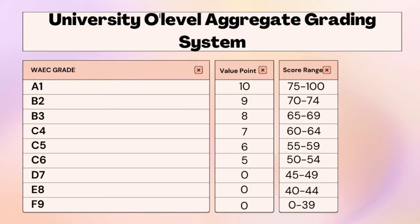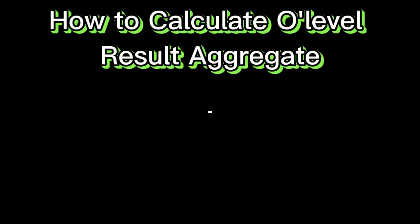For A1 in any core subject you have 10 points. If you score B2 you have 9 points. If you score B3 you have 8 points. Now if you have a D7 in any course, that is not a pass, and that is why each school will always request credits in any four core courses for your study including Mathematics and English. Now let's get into calculating your O-level result aggregate.